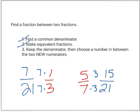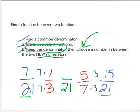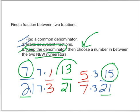Now I'm going to do step number three. I'm going to keep my denominator — looks like I'm using twenty-one. I need to choose a number in between my new numerators. I need a number between seven and fifteen. I could choose eight, nine, ten, eleven, twelve, thirteen, or fourteen. I'm going to choose thirteen. That is my fraction in the middle.